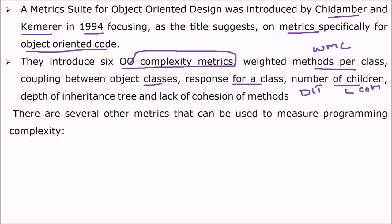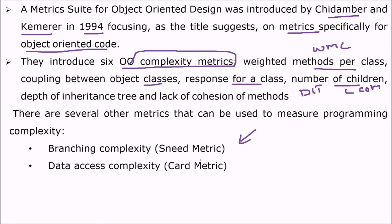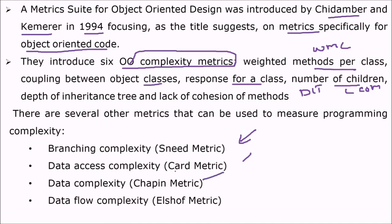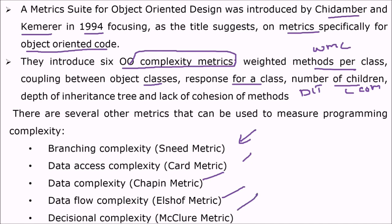There are several other metrics used to measure programming complexity, including branching complexity, data access complexity known as the CARD metric, data complexity known as the Chapin metric, data flow complexity using LSOFT metrics, and decisional complexity known as the McLear metric.